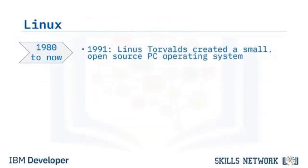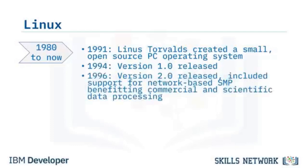In 1991, Linus Torvalds created a small open-source operating system for a PC, releasing version 1.0 of Linux in 1994. In 1996, the version 2.0 release with support for network-based symmetric multiprocessing, or SMP, provided a serious technical benefit for commercial and scientific data processing, evolving Linux into a powerful network and server operating system.